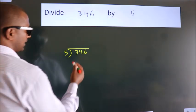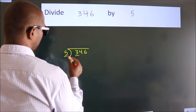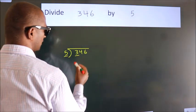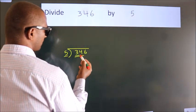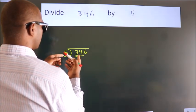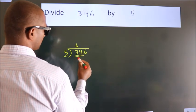Next, here we have 3. Here 5. 3 is smaller than 5, so we should take 2 numbers: 34. A number close to 34 in the 5 table is 5 times 6 equals 30.